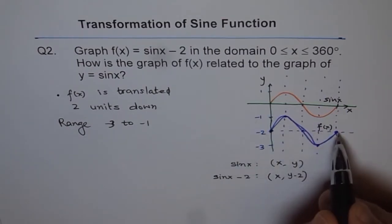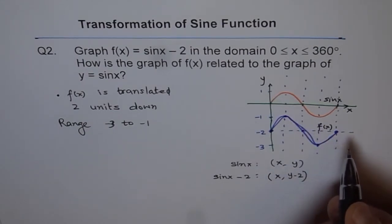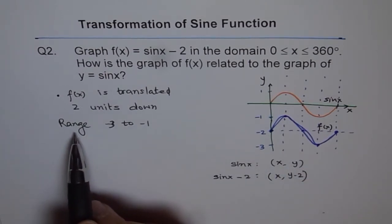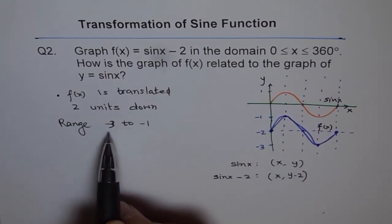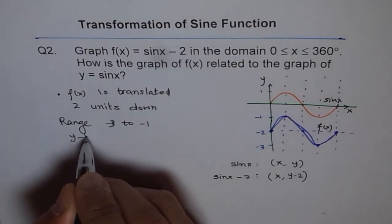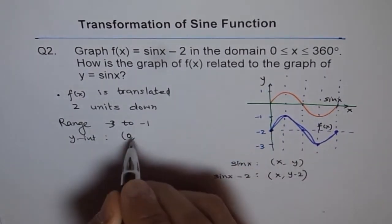The time period remains same. And the x values for each and every point remain same. The maximum and minimum changes and thereby the range changes from -3 to -1. How about the y-intercept? So y-intercept is now 0, -2.